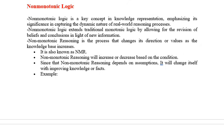Monotonic means: if you make a conclusion about something, and you add any new information to that concluded thing, there will be no change in the result — that is known as monotonic logic. Non-monotonic is completely opposite: if you add any information to the concluded data, the result may change. That type of reasoning is known as non-monotonic logic.